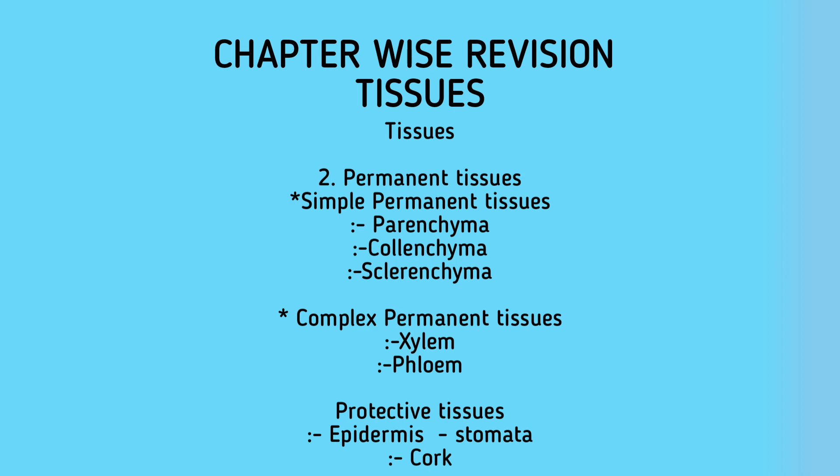Simple permanent tissues are classified into parenchymatous, collenchymatous, and sclerenchymatous tissues. Parenchymatous tissues have living cells with enough intercellular spaces, and their main function is storage of food materials. There are two types: chlorenchymatous cells, present mainly in leaves and helping in photosynthesis by containing chlorophyll, and aerenchymatous cells, present mainly in aquatic plants and helping them float on water.